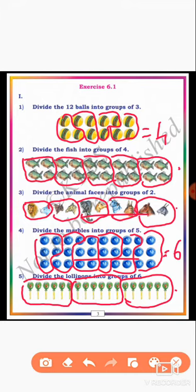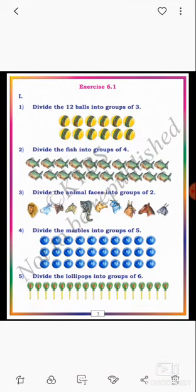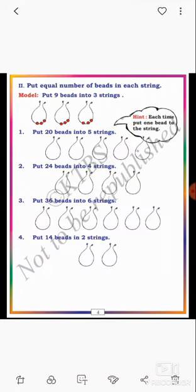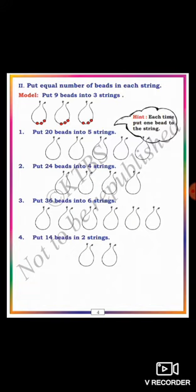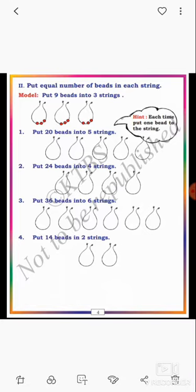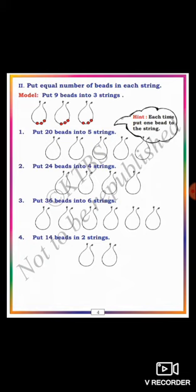Next, go to the 2nd main. In the 2nd main, put an equal number of beads in each string. The model example: put 9 beads into 3 strings. Dear students, 9 beads are already given. These 9 beads are equally distributed in 3 strings, each string having 3 beads. Equally, 9 beads are distributed in 3 strings.